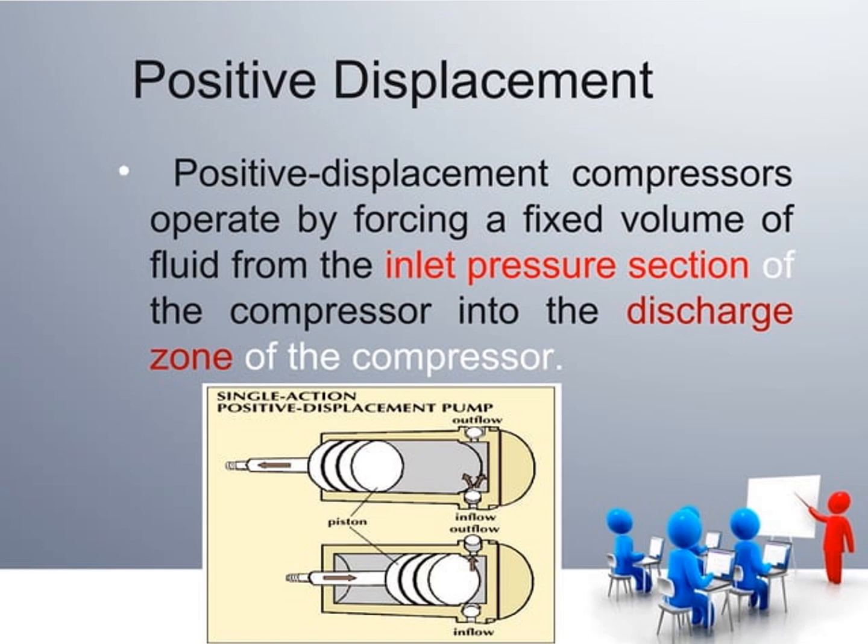Positive displacement compressors operate by forcing a fixed volume of fluid from the inlet pressure section into the discharge zone of the compressor. The volume is fixed and does not change from the inlet to the discharge zone. In the diagram of a single-action positive displacement compressor, you can see the piston moving within the cylinder, expanding and compressing. While compressing, the volume and pressure change.